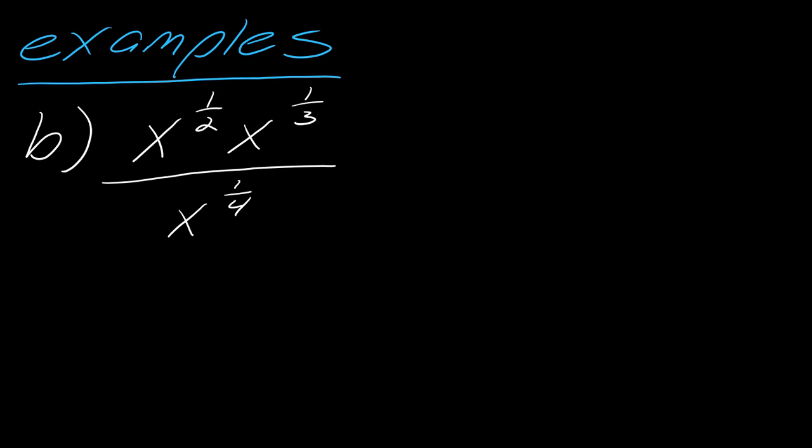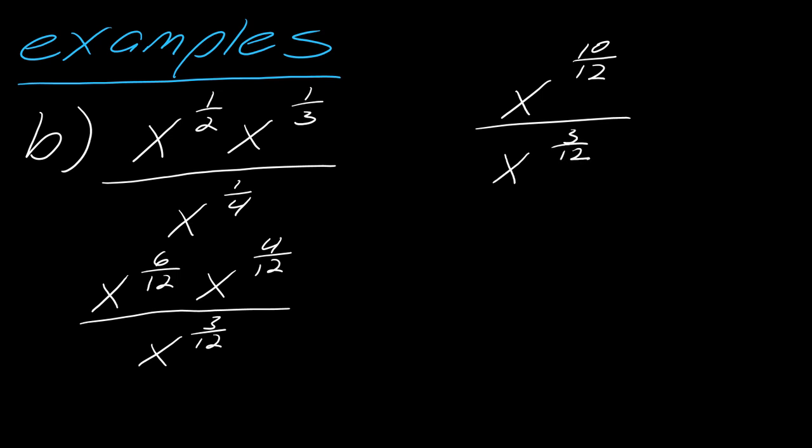And last thing. Again, maybe you want to pause the video here and hit play when you're ready. Once again, I just want to rewrite all of these exponents with the denominator of 12, because it's the LCD of all the fractions I'm looking at. I'm going to rewrite this as x to the 6 over 12, x to the 4 over 12, and x to the 3 over 12. Now what I'm going to do is add these two exponents first, piece by piece. This will be x to the 10 over 12 over x to the 3 over 12, and then I can subtract those. This will ultimately equal x to the 7 over 12. That's my final answer.